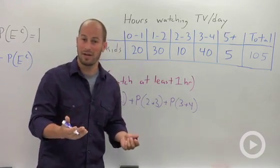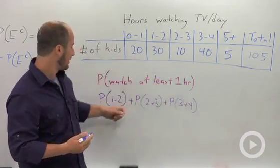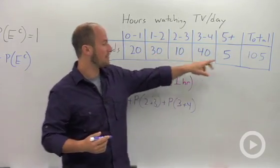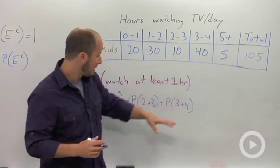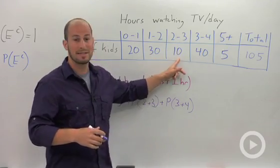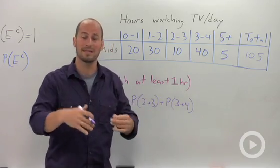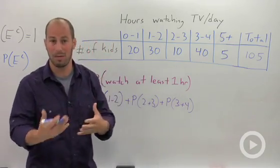Each of these isn't that hard in its own right. We have 105 students total, so basically the probability they watch one to two is just going to be 30 out of 105. Add that to two to three, that was going to be 10 out of 105. We could add up these all together fairly easily, but this is an example to show you how the complement works.